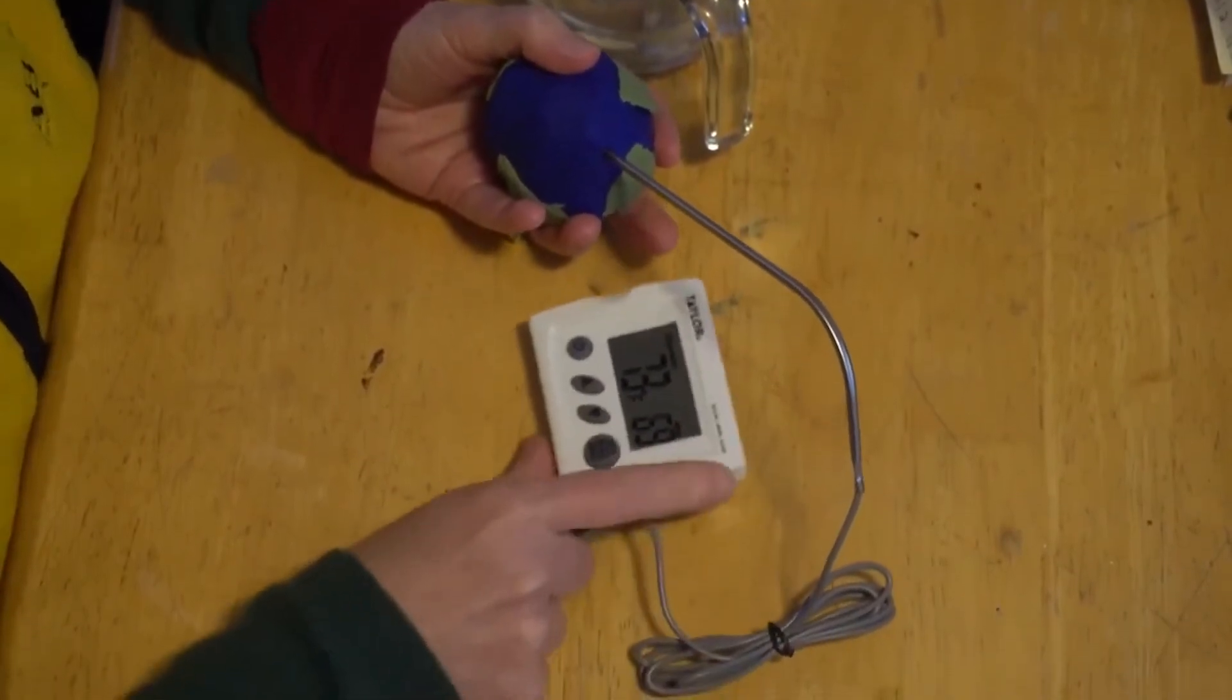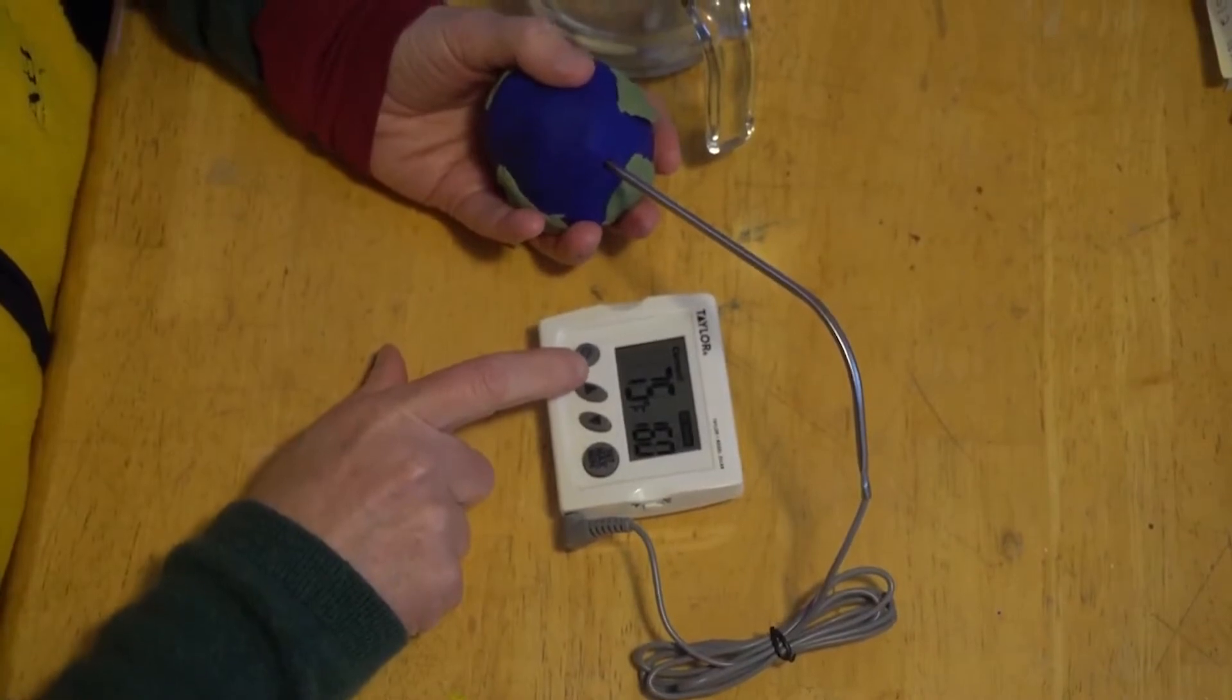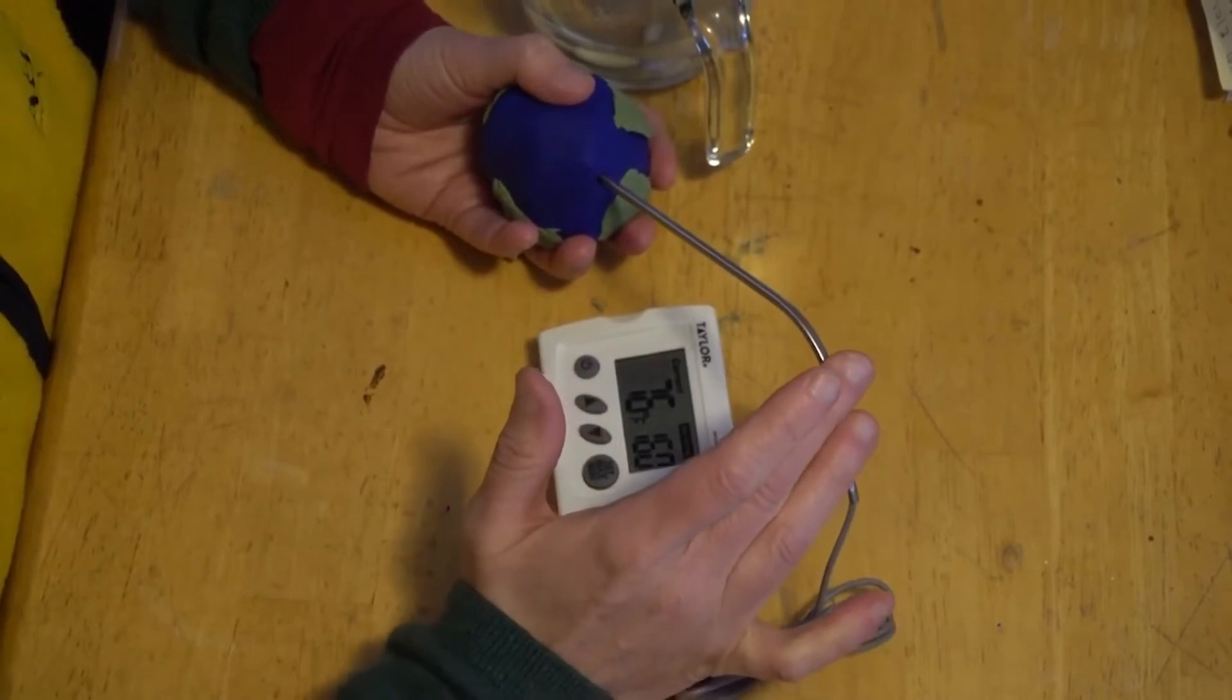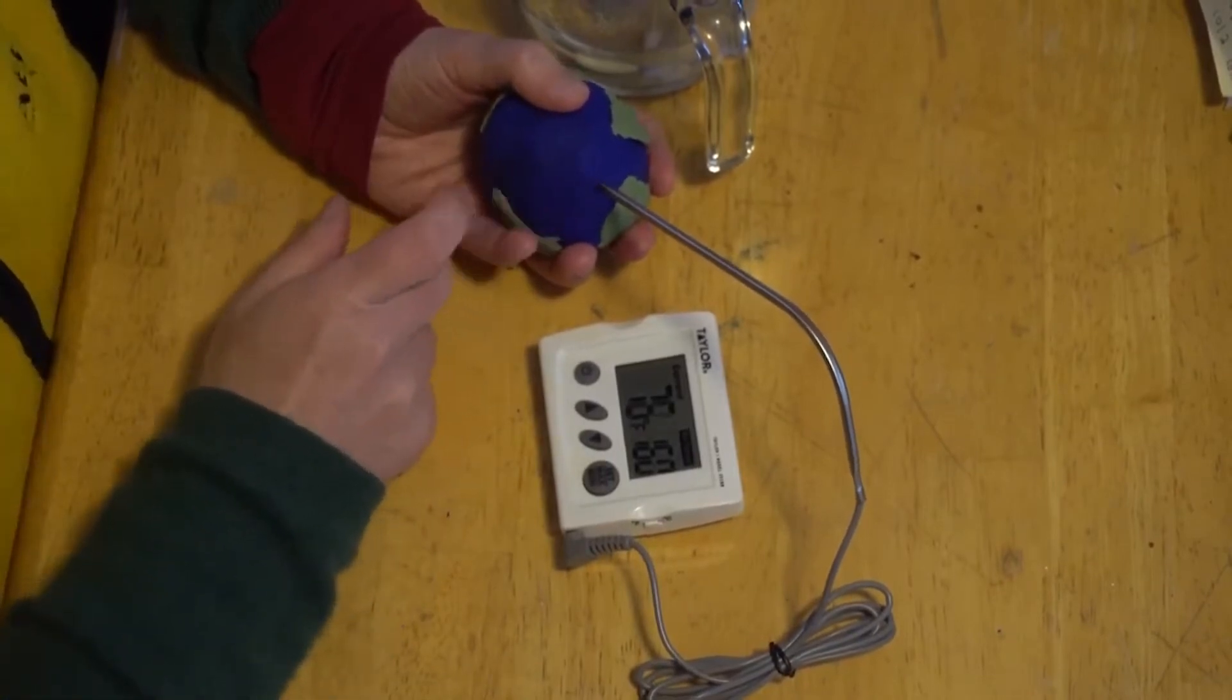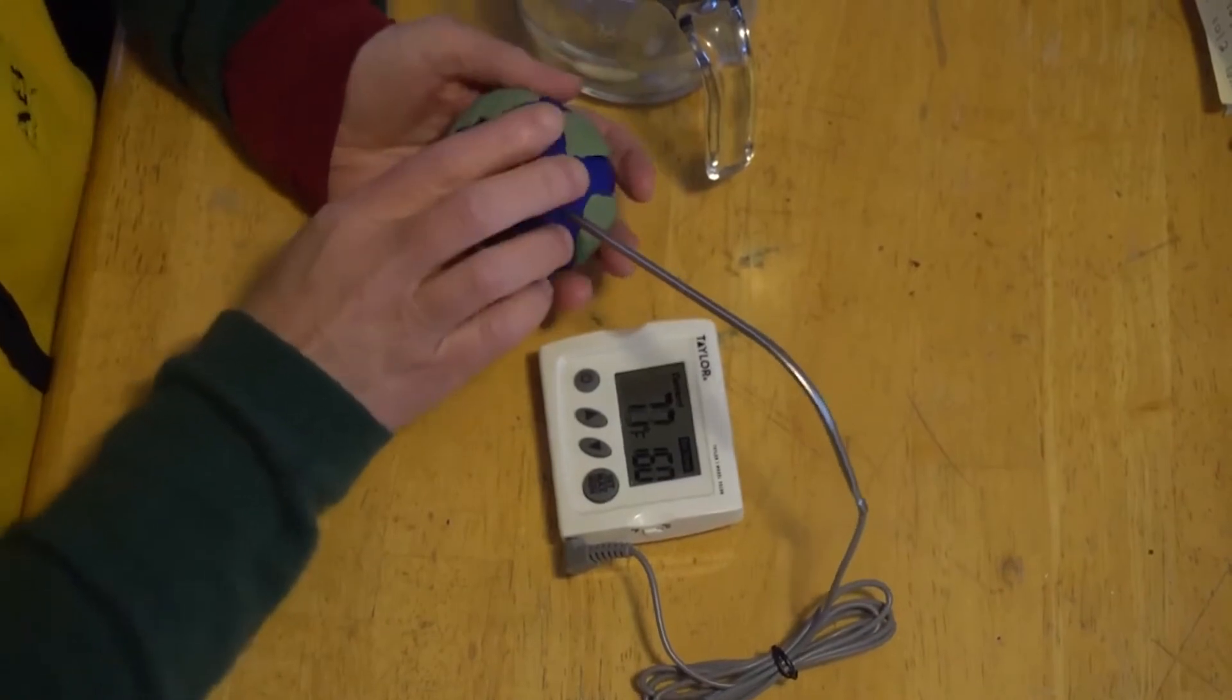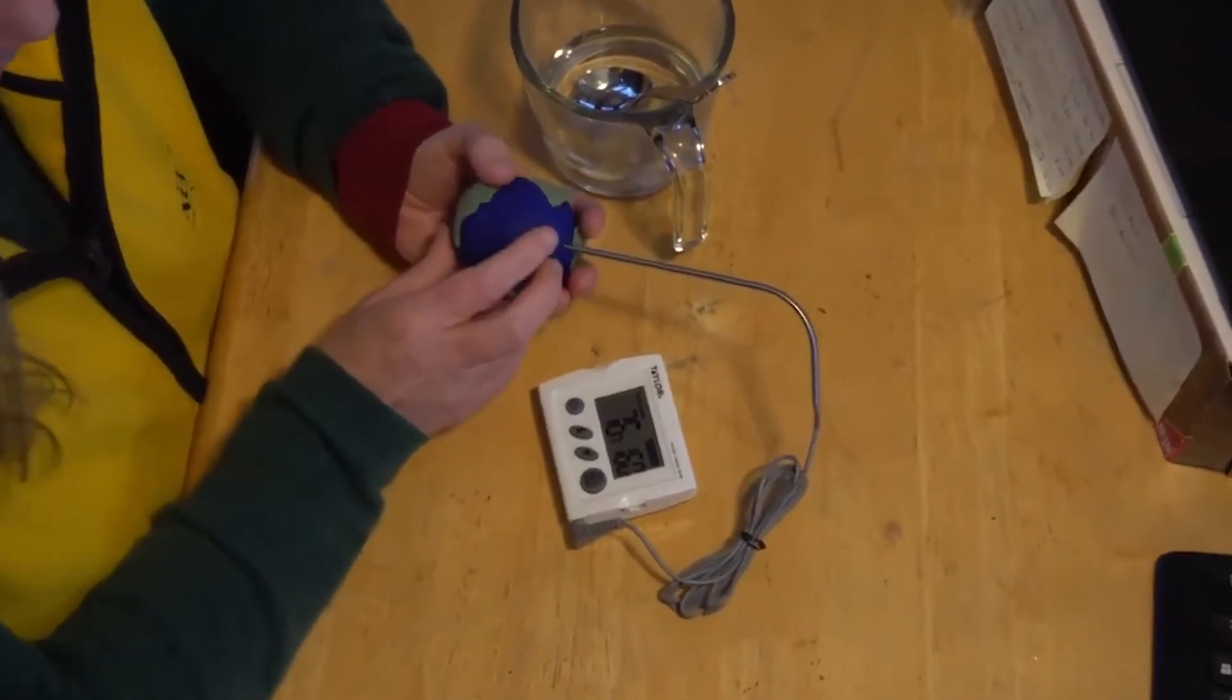And here you can see the temperature started at 71 degrees, which was our ambient air temperature, and it has gone up to 75 degrees at the center of the Earth, the core. So that is now at 76 degrees, 77. So it is fluctuating here. We are going to let that sit for a little bit and talk about why Earth's center creates heat and energy.